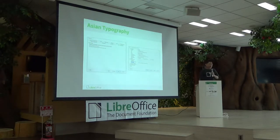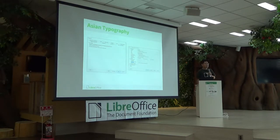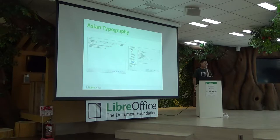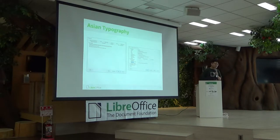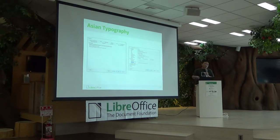In LibreOffice there are many features that are designed specifically for CJK users, such as Asian typography. We are allowed to use han punctuation, and we have line breaking rules where we can set forbidden characters at the beginning and end of the line, and Asian kerning and character compression for punctuation and Japanese kana.